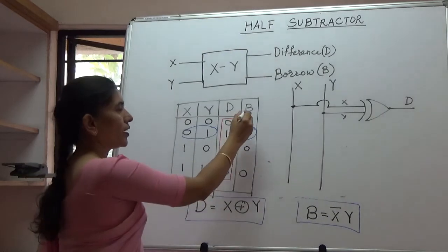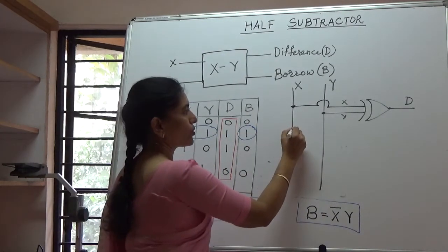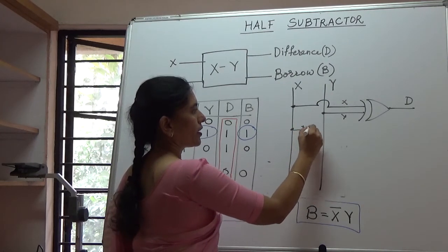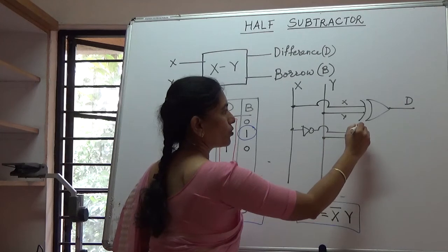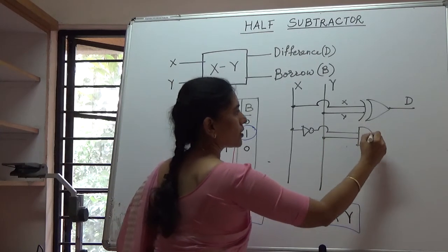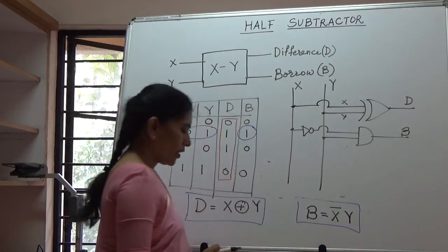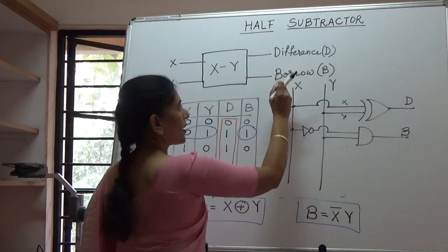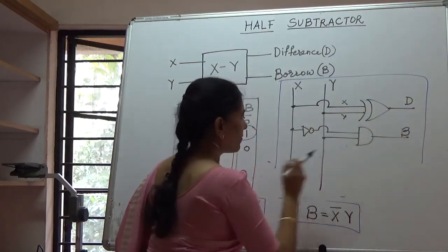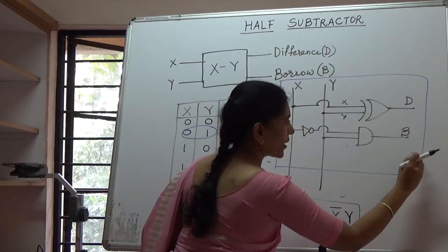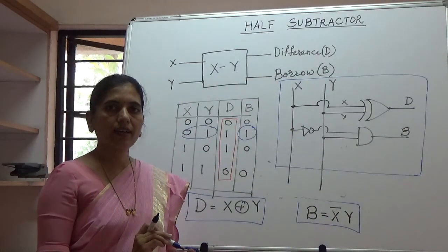To generate the borrowed output, we require X bar. So we use a NOT gate and the Y output. Both these are ANDed to generate the borrowed bit. So this is the simplest implementation of a half subtractor using one XOR gate and one AND gate. Thank you.